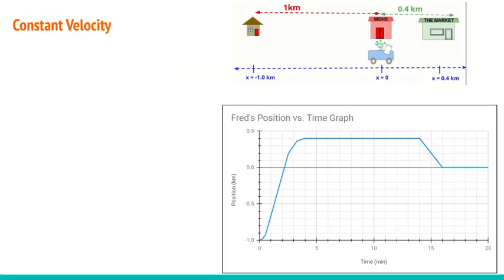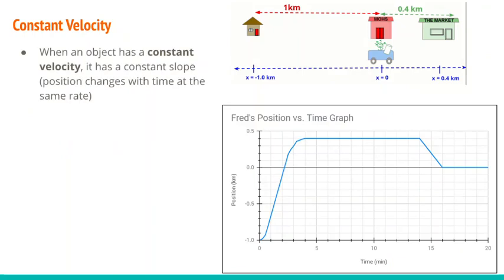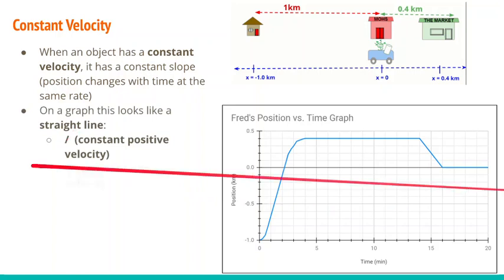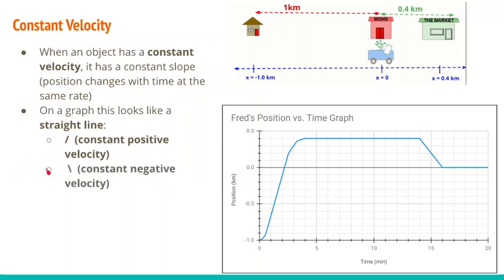We can also have constant velocity on a position versus time graph. When an object has a constant velocity, it has a constant slope — the position changes with time at the same rate — meaning a straight line. A constant positive velocity is a straight positive slope; a constant negative velocity is a straight negative slope; and constant zero velocity — at rest — is a horizontal line. So straight up is positive, straight down is negative, and horizontal is at rest.